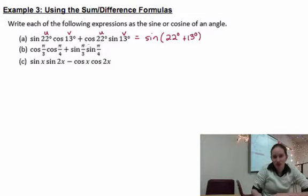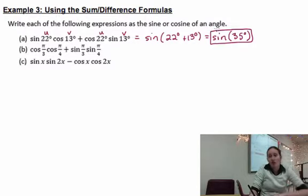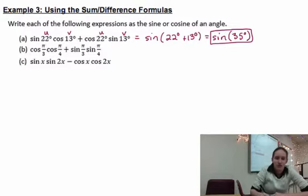So we can rewrite this, which looks like the right side, we can actually rewrite it as the left side and get sine of 35 degrees. That's our answer. If we ended up with something that was on our unit circle, we could go ahead and figure out what that was, but if we don't, then we just leave it as sine of 35. So let's try the next one.